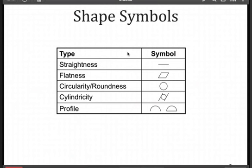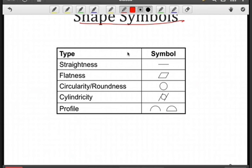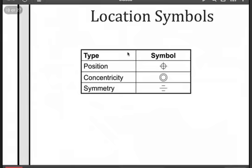You're going to have to come to terms with the symbology. When you see these symbols, you should recognize that you have a specific type of tolerance. We're talking about shape — being straight, flat, or circular. Don't worry about profile for right now, as that's a little more complicated. But these are fairly simple geometric tolerances that we'll be looking at in the next lecture.